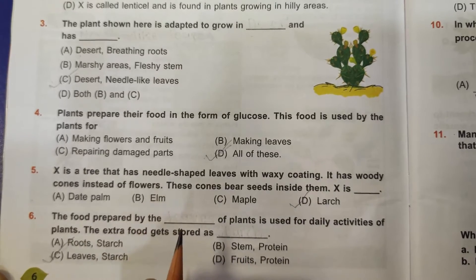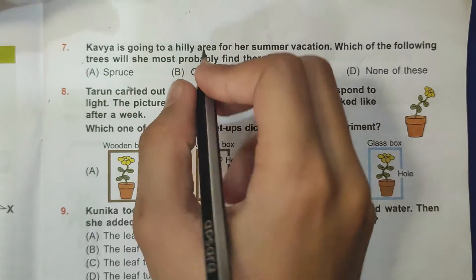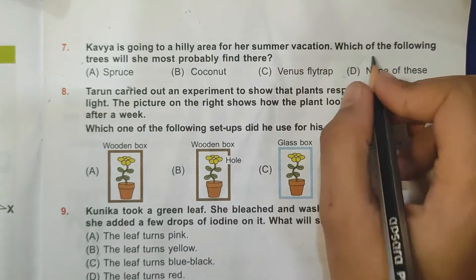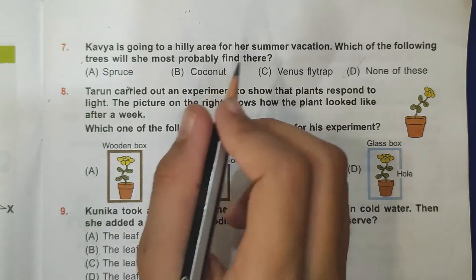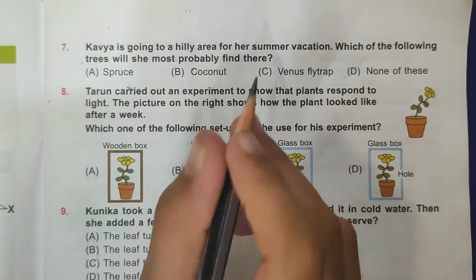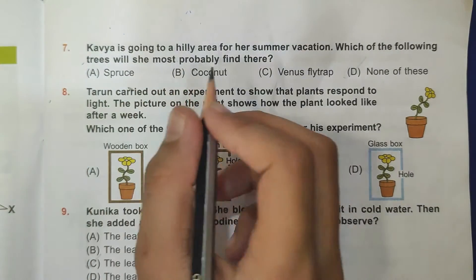Seventh question: Kavya is going to a hilly area for her summer vacation. Which of the following trees will she most probably find there? So she will most probably find spruce as she is going to a hilly area. So A spruce is the correct answer.